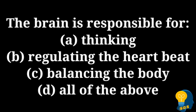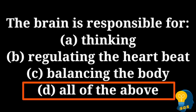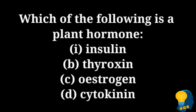The next question is: the brain is responsible for. The options are option A thinking, option B regulating the heartbeat, option C balancing the body, option D all the above. The correct option is option D, all the above, because the brain has various regions and each region is responsible for different activities — it controls and maintains the different activities performed by humans. So the correct option is all the above.